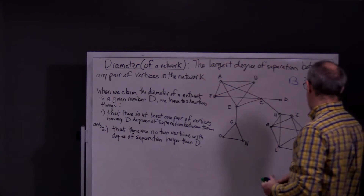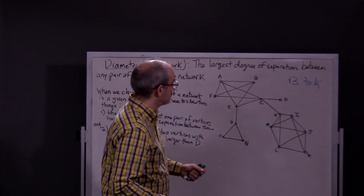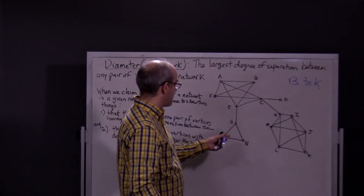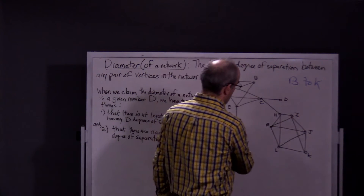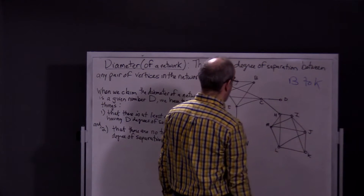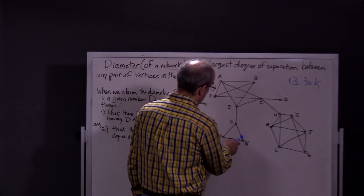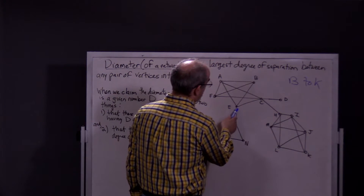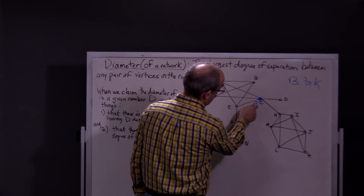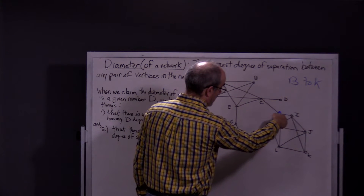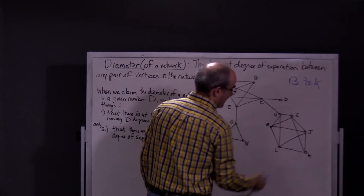N and K. It kind of makes sense that going from this cluster over here to that one might take a while. N to K is one, two, three, four, five, six.